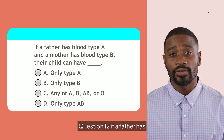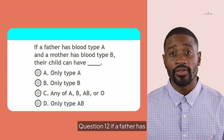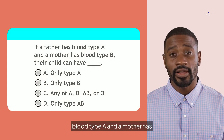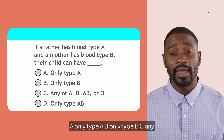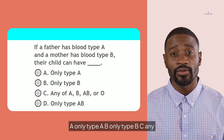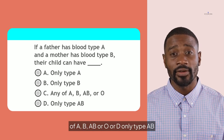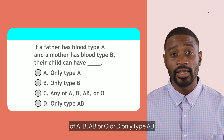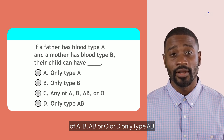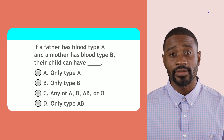Question 12. If a father has blood type A and a mother has blood type B, their child can have which blood type? Is it A. Only type A, B. Only type B, C. Any of A, B, AB, or O, or D. Only type A or B? Reflect on blood type inheritance.